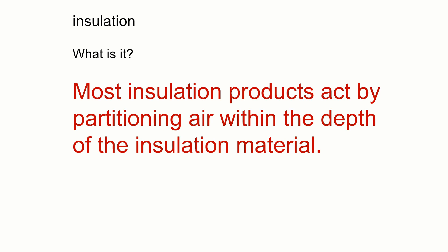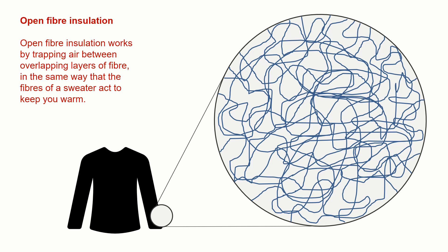We probably all know what insulation is, but effectively it's a material that partitions air or gas within the depth of its material. It holds air within itself, creating a layer which makes it more difficult for heat to pass through. There are a couple of different types. The first subtype is open fiber insulation — very much like a jumper or sweater, where fibers are woven or matted together. The layers of fibers partition air at a microscopic level. The deeper the fabric, the more layers, the more air caught, and therefore the less heat lost through it. Things like mineral wool tend to be open fiber insulation types.